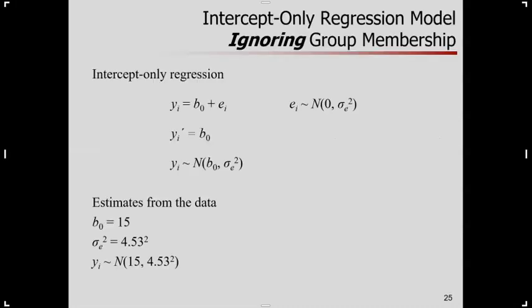We can do this within group or group-specific modeling, even with no predictors, as a regression. So here was our intercept-only regression, ignoring group membership. This is when we said, forget grouping, just lump everybody together all at once. And we had our model, and so we had an estimate for the overall mean or intercept, was 15, error variance, and so on.